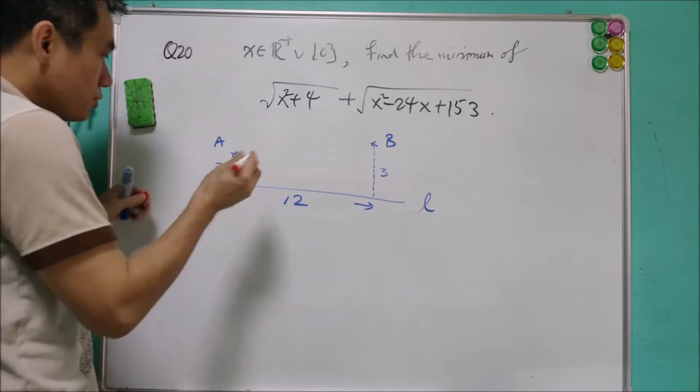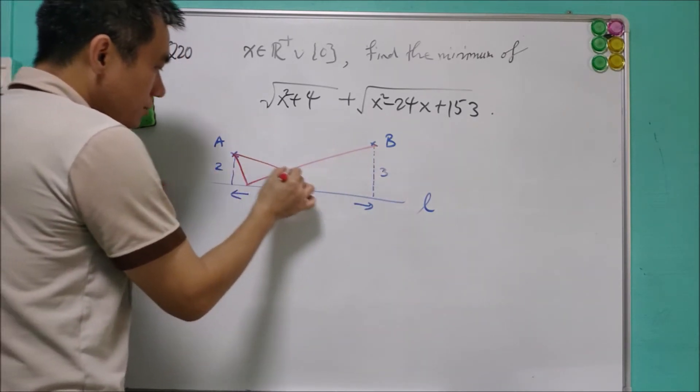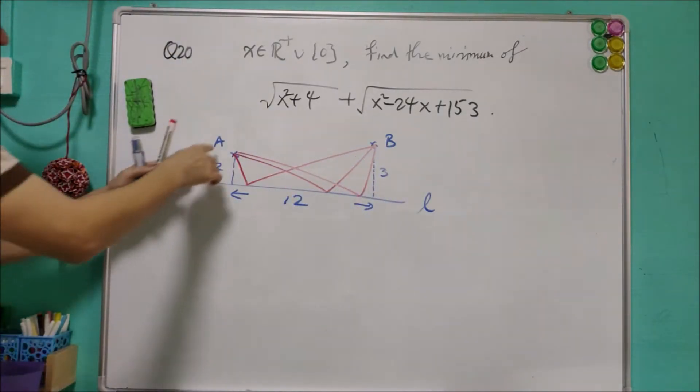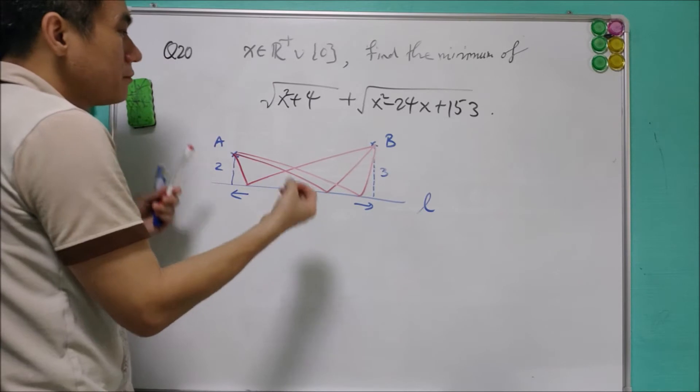So you can go through this way, or go through that way, or go through this way. Which of the path will make a minimum distance?